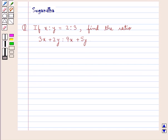Hello and welcome to the session. In this session we discuss the following question: if x is to y is equal to 2 is to 3, find the ratio 3x plus 2y is to 9x plus 5y.